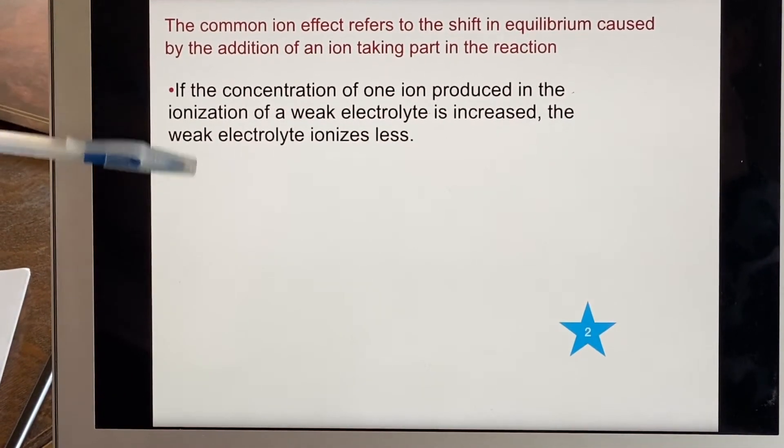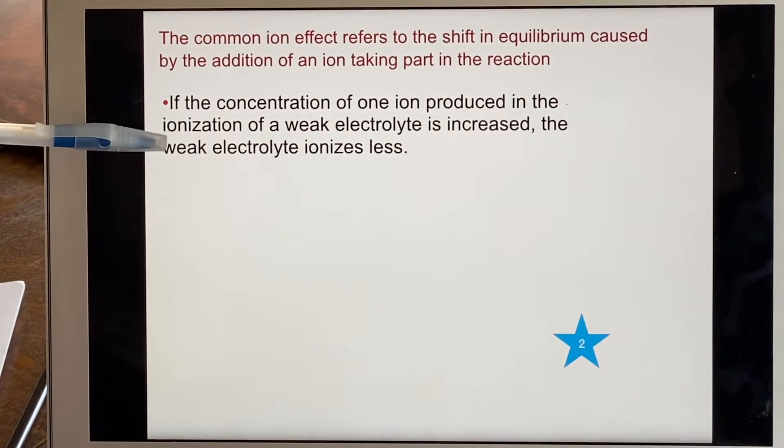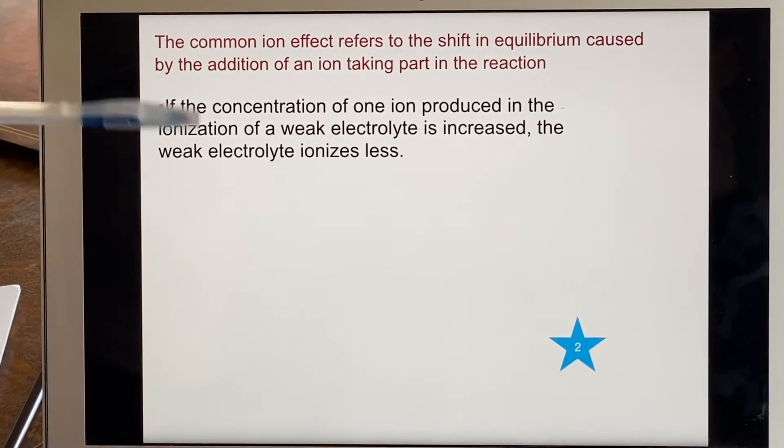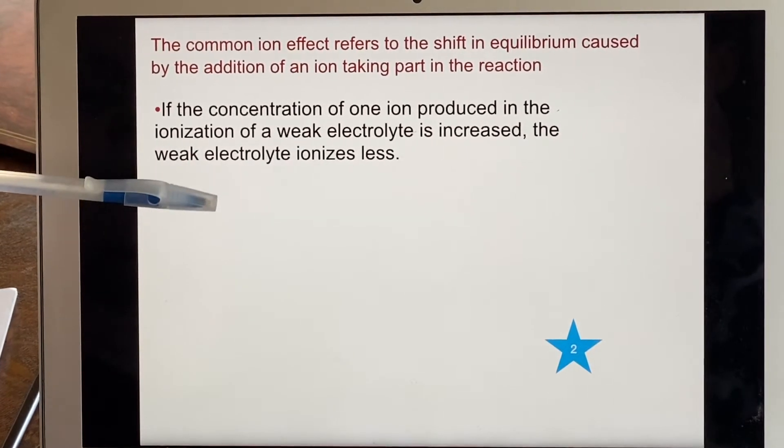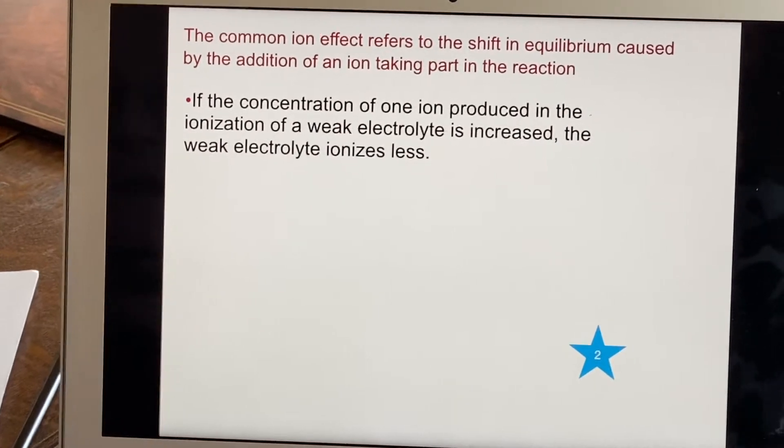I mean, you can read this and it's like, okay, I got to think really hard when I read something like this. If the concentration of one ion produced in the ionization of a weak electrolyte is increased, the weak electrolyte ionizes less. What? What did they just say?